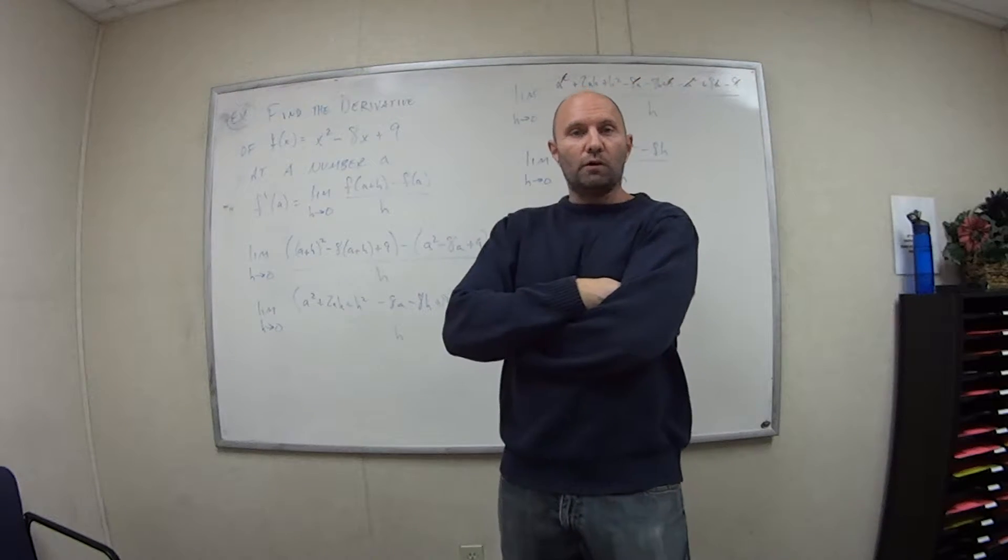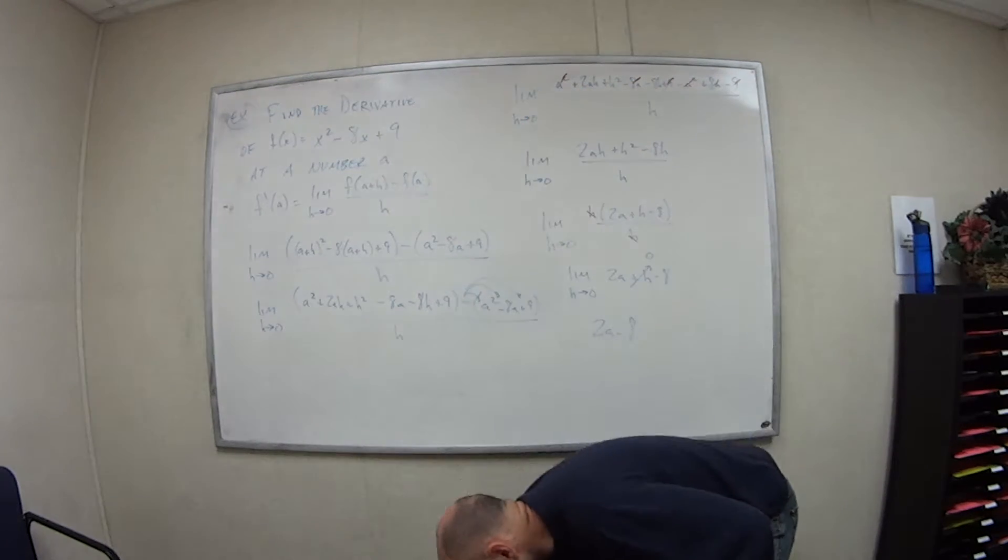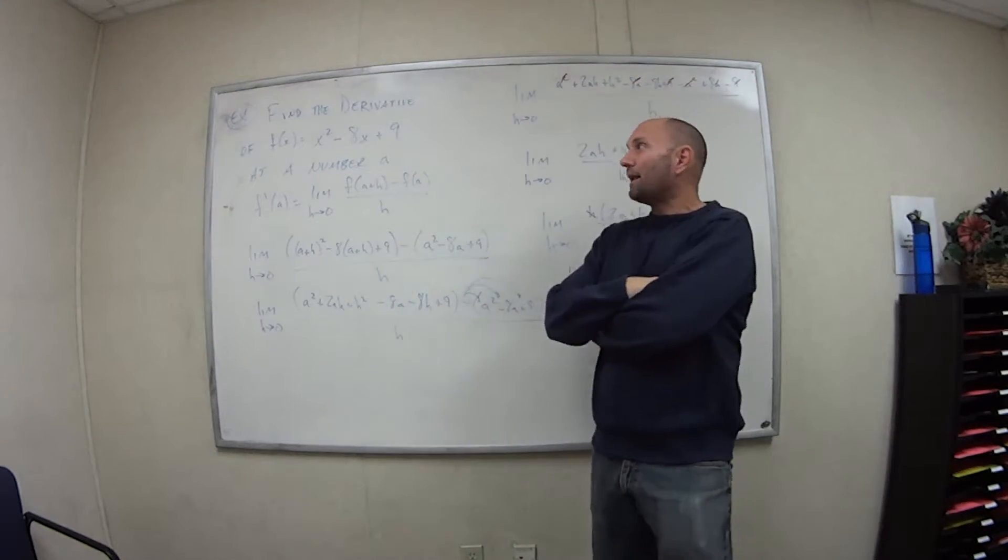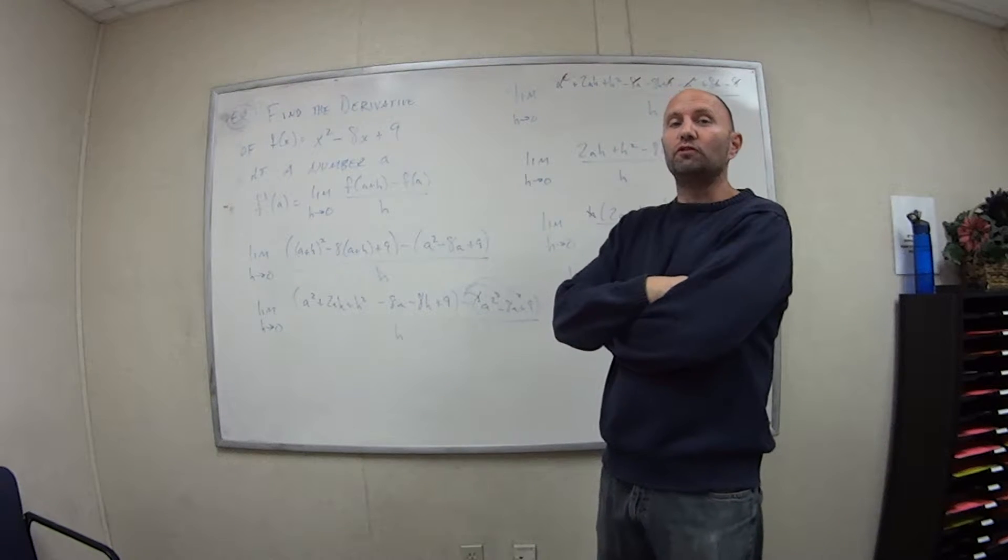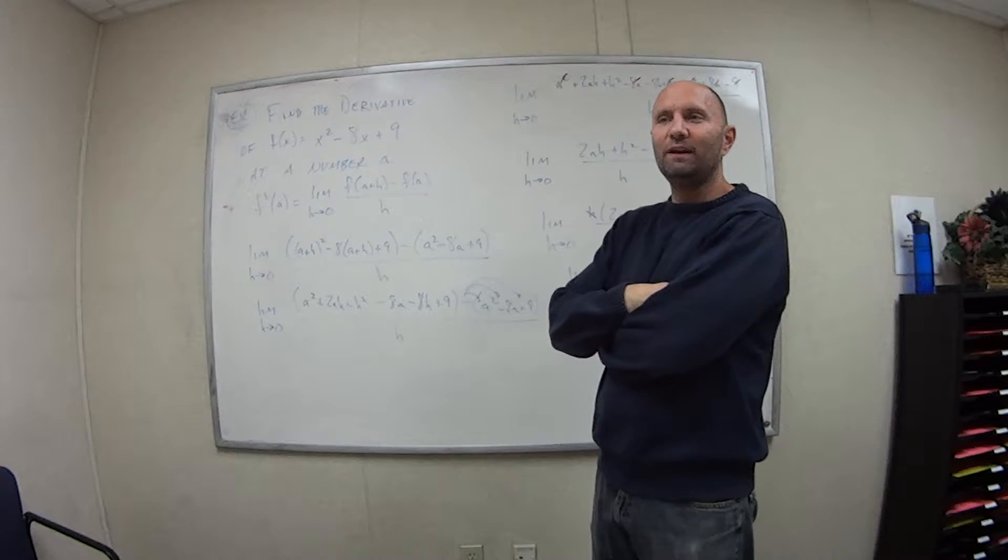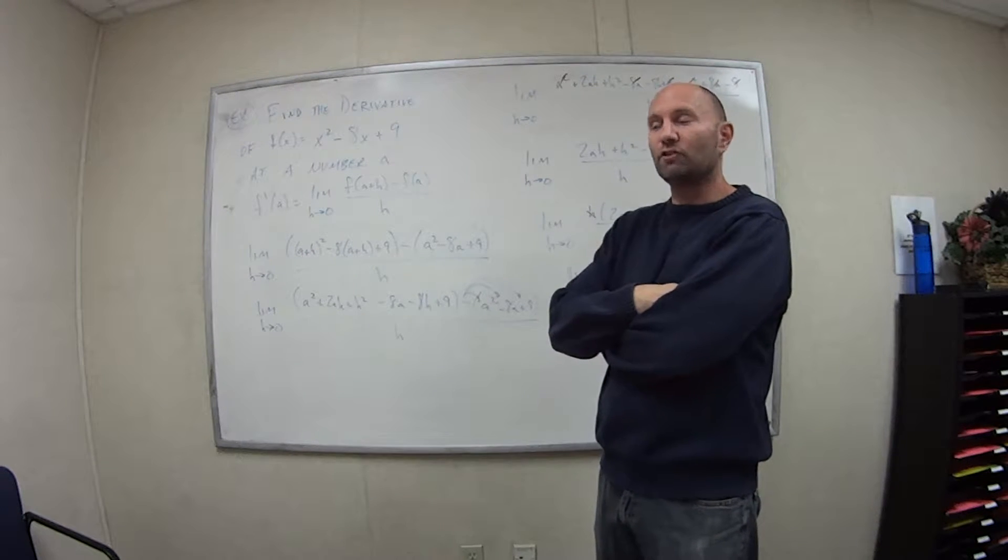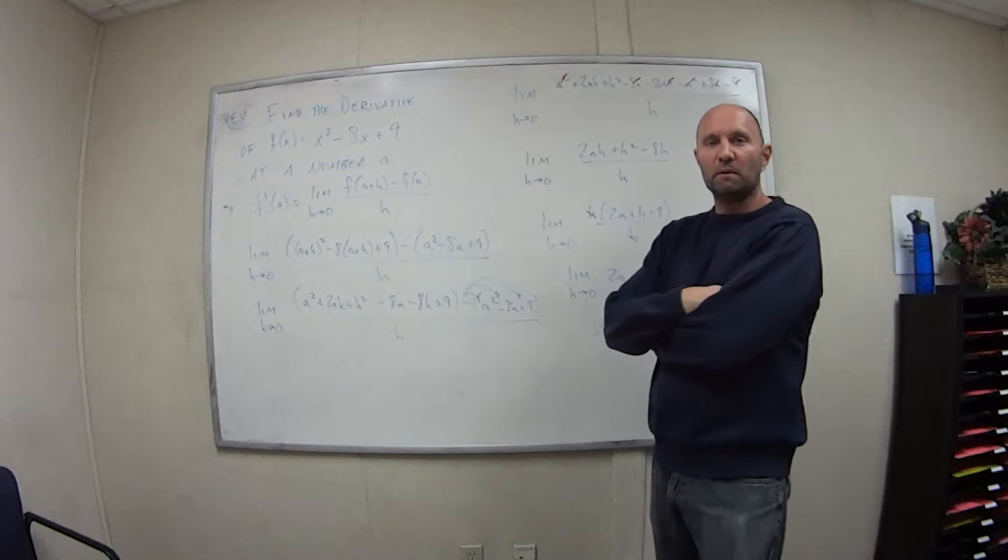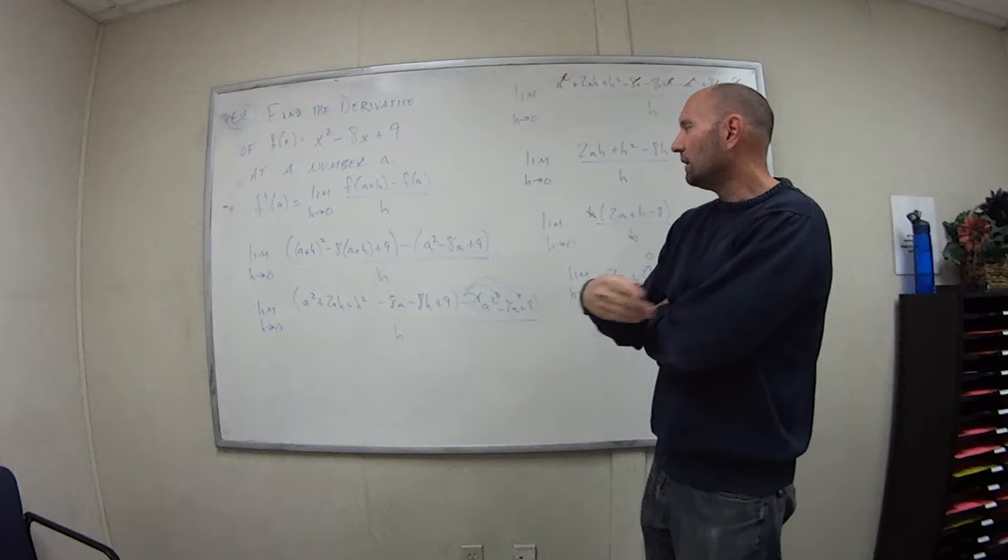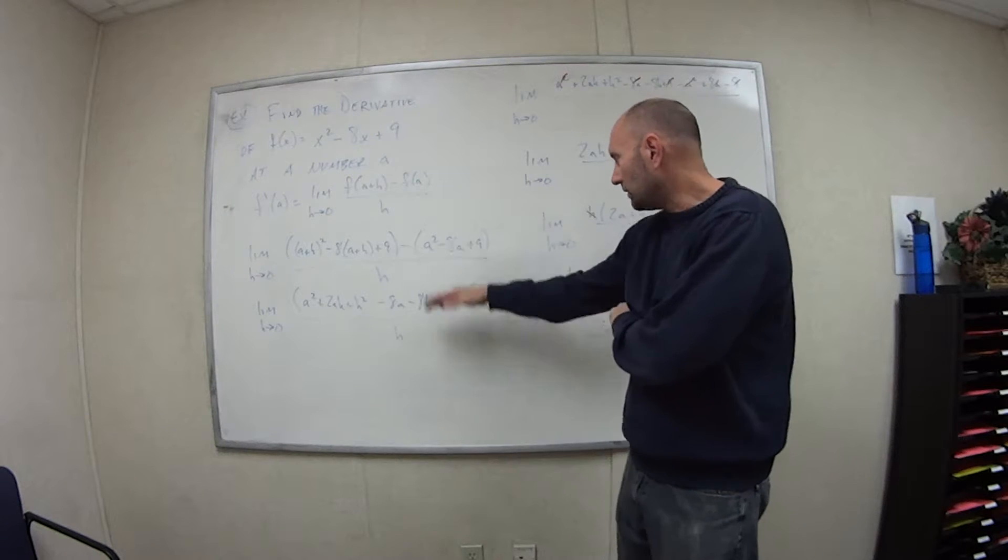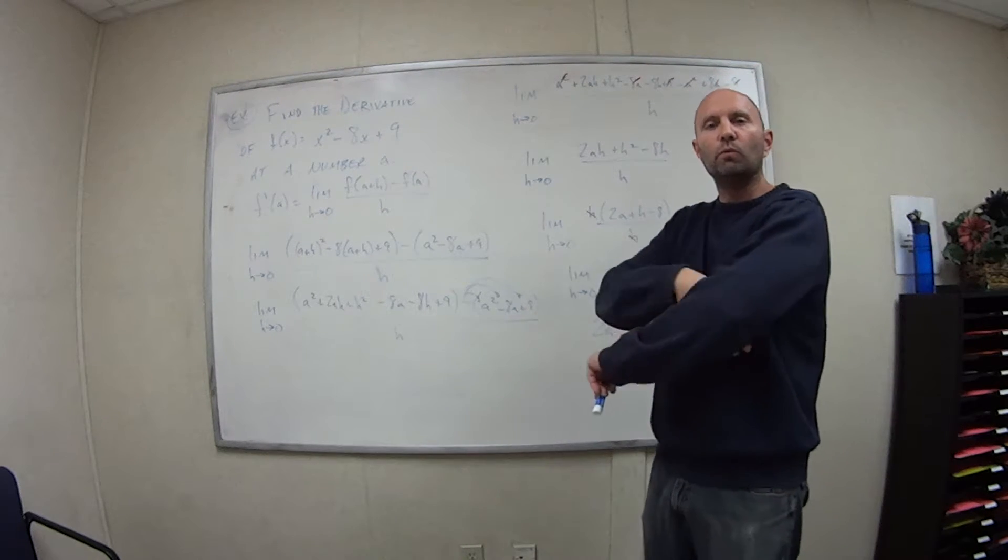So our derivative of this function at a number a is 2a minus 8. This is a lot of work, isn't it? And again, as I mentioned, it's not really that complicated of a function. It's a polynomial of degree 2. And if we start getting into some really messy functions, this could be a real nightmare, couldn't it? Especially with the algebra. Mess up one sign, you know, you mess up a negative sign right here, and all the rest of this is wasted work.